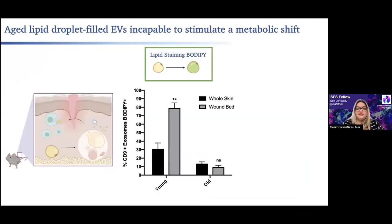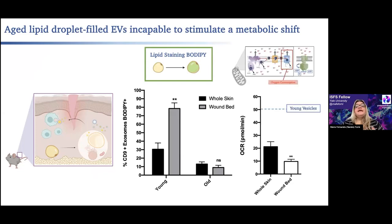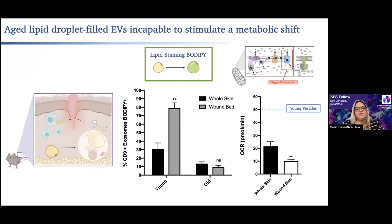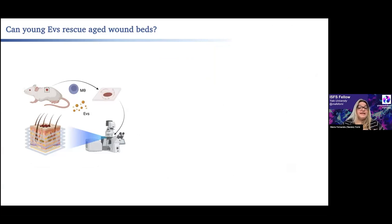But what exactly happens during aging? In the old skin — not only in the wound bed but in the whole skin — we have a lack of production of lipid-laden extracellular vesicles. More importantly, when we retrieve extracellular vesicles from old skin and expose them to young monocytes, we see that these vesicles lack the capacity to completely rewire mitochondrial oxidative phosphorylation and associated metabolism, and we believe this impairs monocyte-to-macrophage differentiation during aging.